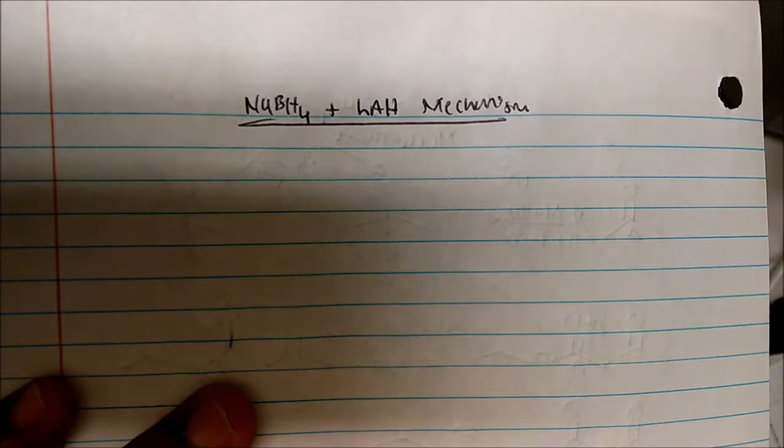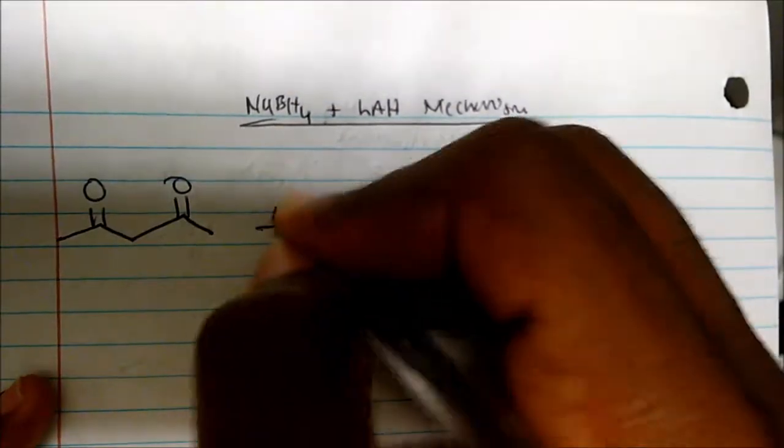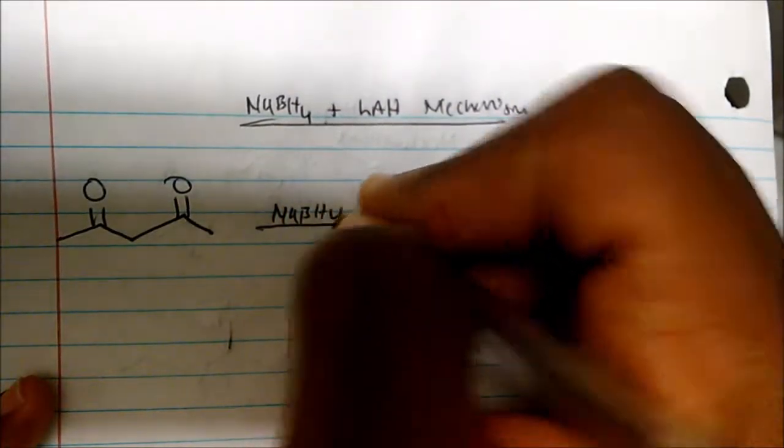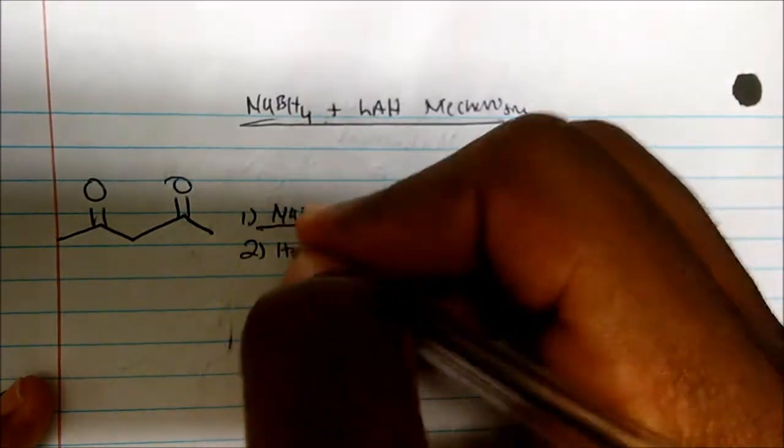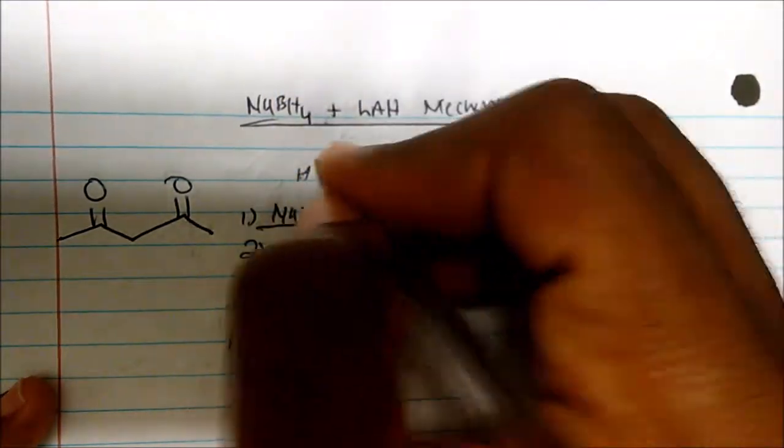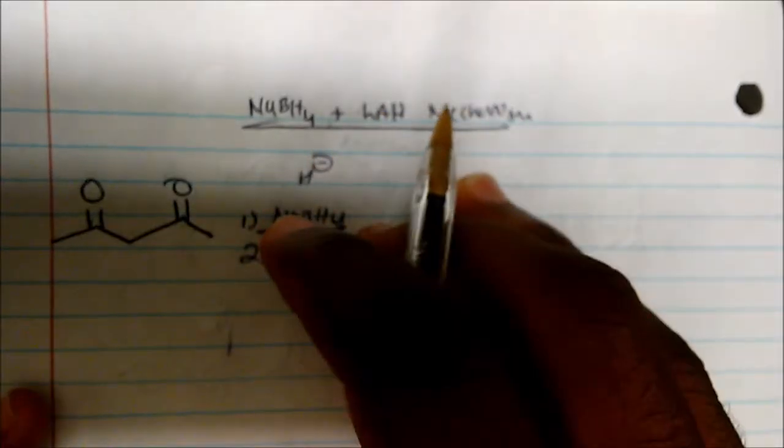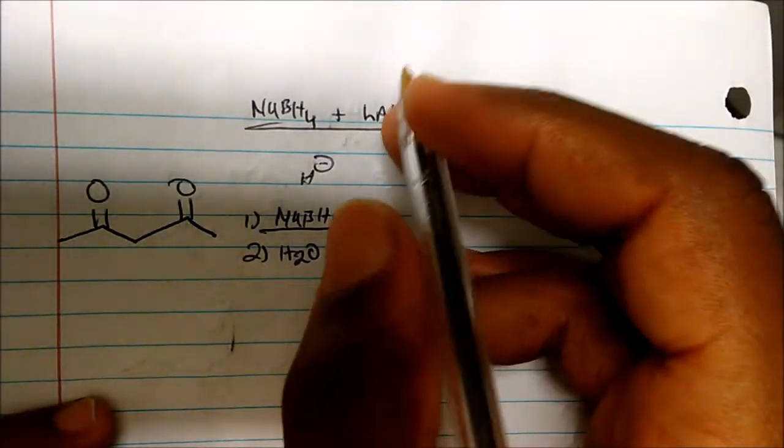The general mechanism of how sodium borohydride reduces ketones and aldehydes to alcohols, and how lithium aluminum hydride reduces everything - ketones, aldehydes, esters, and carboxylic acids. If you're given this molecule and you add sodium borohydride in the first step, and then in the second step you have H2O, think of sodium borohydride and lithium aluminum hydride as some sort of H minus.